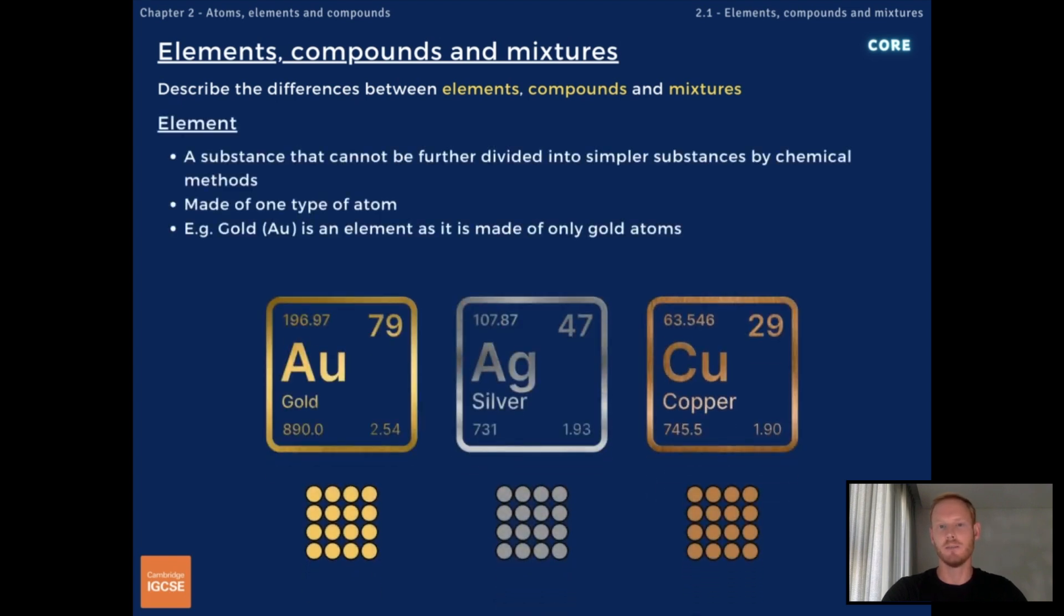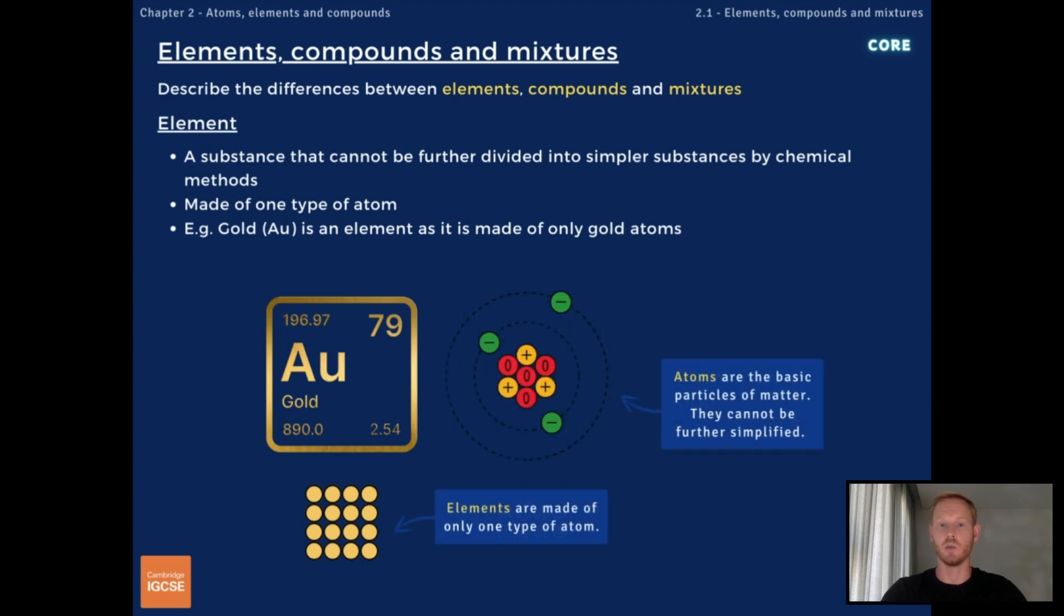So, elements are the simplest forms of matter. They are pure substances made of only one type of atom. For example, gold is an element as it's made of only gold atoms. The atom, which we'll cover in more detail in chapter 2, is the smallest indivisible unit of an element. Because elements are only made of a single type of atom, they cannot be decomposed into anything simpler by chemical methods. They are the simplest forms of matter, the base substances from which all other substances are made.